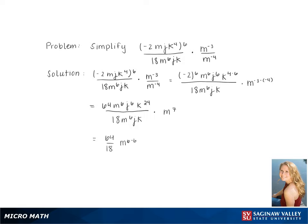Separating the fraction gives us 64 over 18, then we subtract the exponents from the top of the fraction from the bottom of the fraction. We get m to the 6th minus 6, j to the 6th minus 1, k to the 24 minus 1, times m to the 7th.